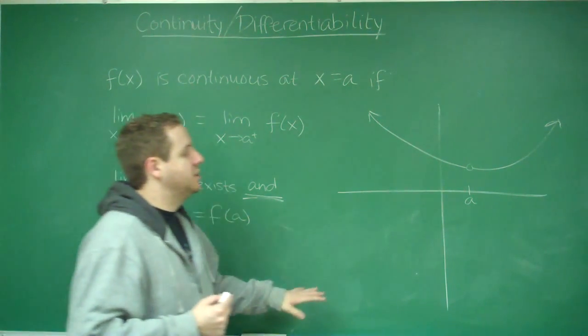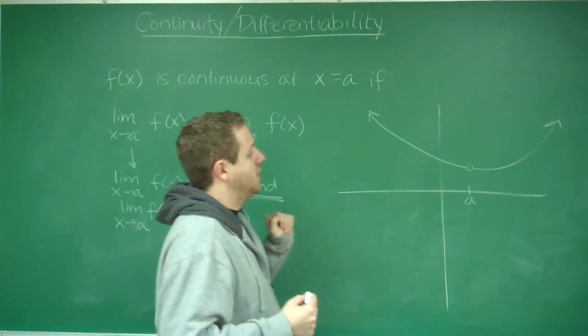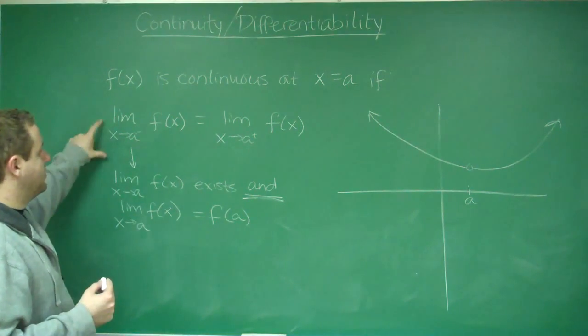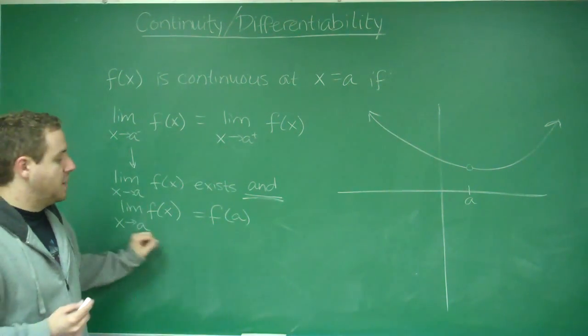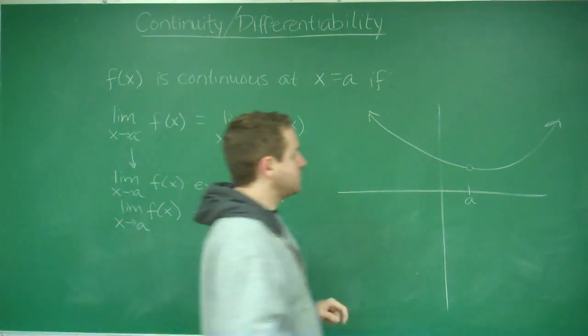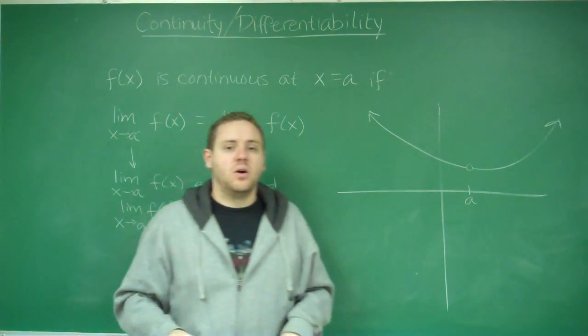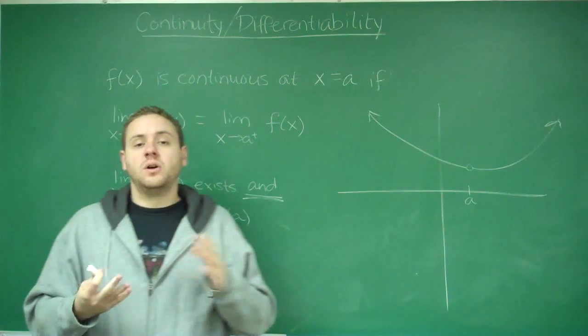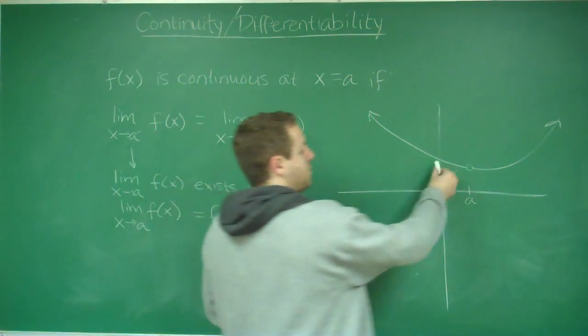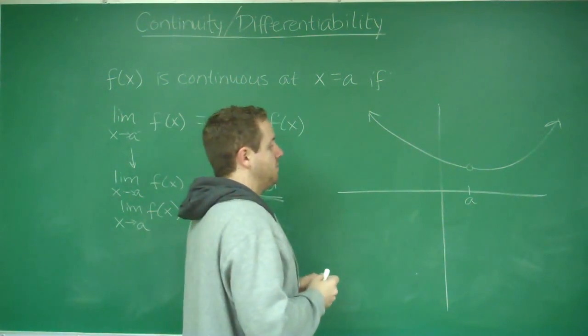So what I've graphed over here is a function in which this first condition is satisfied but the second one is not. If you take the limit from the left or the right here, since it's going to that open circle, a removable discontinuity, this limit from the left and the right are definitely the same.